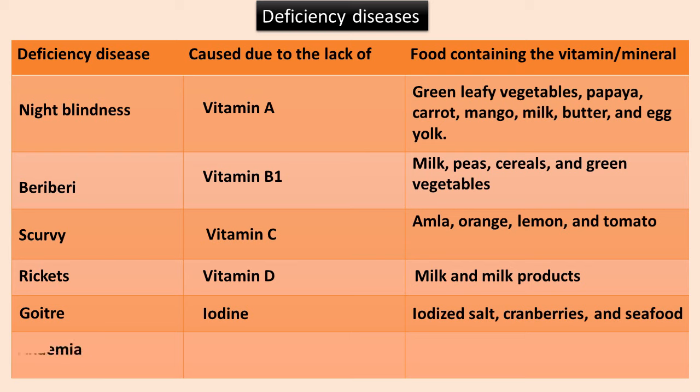Anemia is caused by iron deficiency. Sources of iron include spinach, apple, guava, brinjal, and meat.